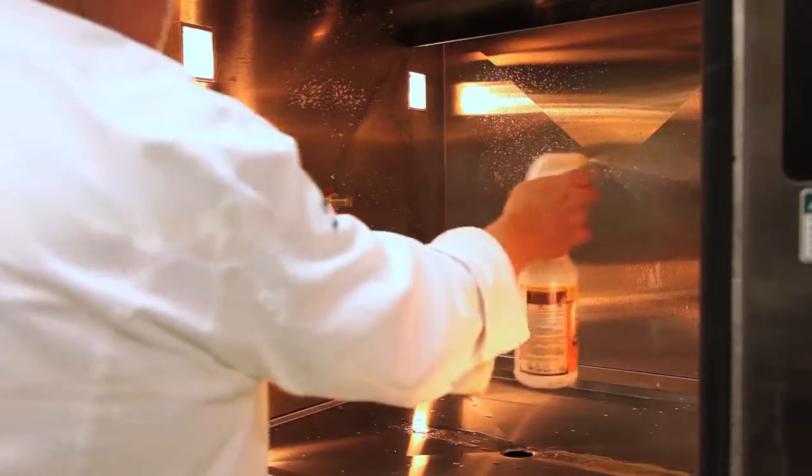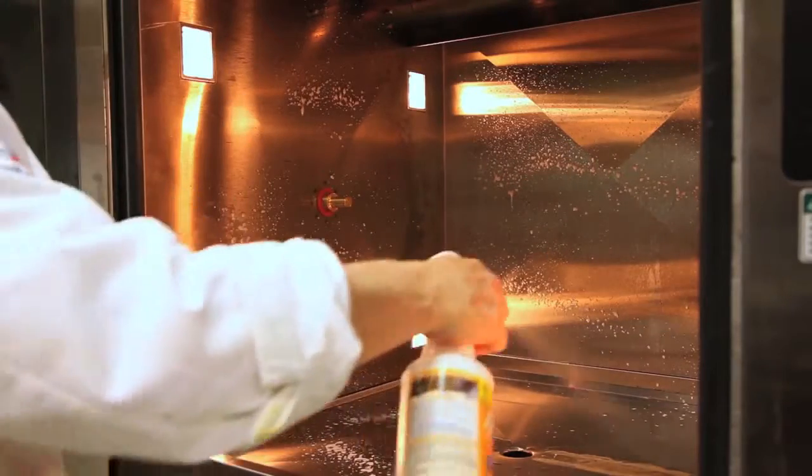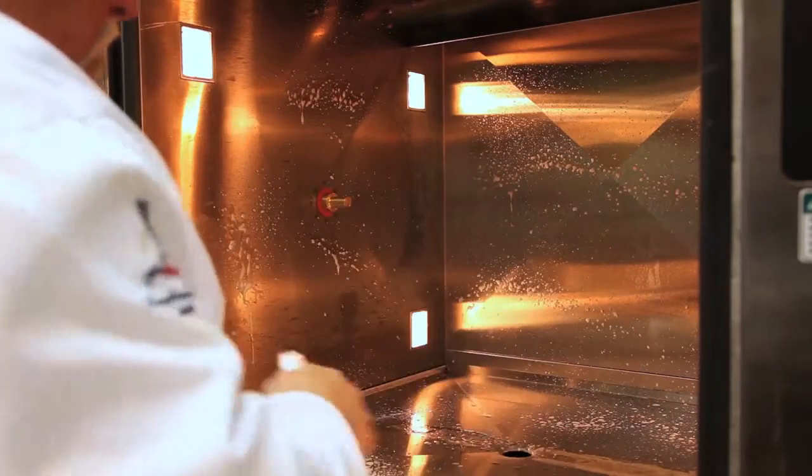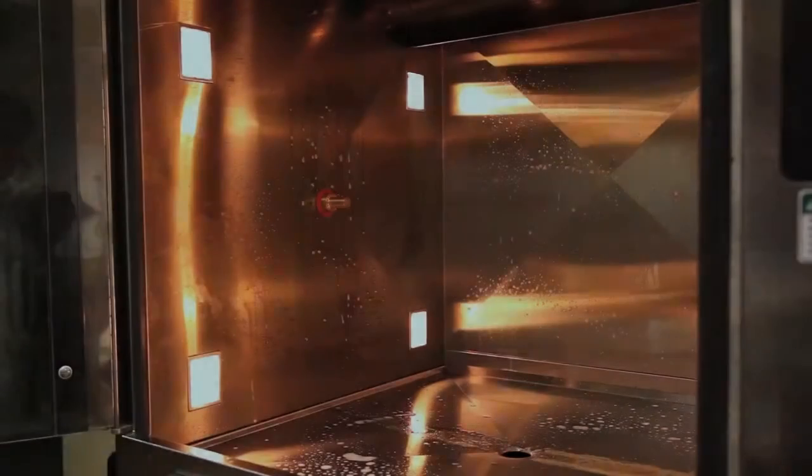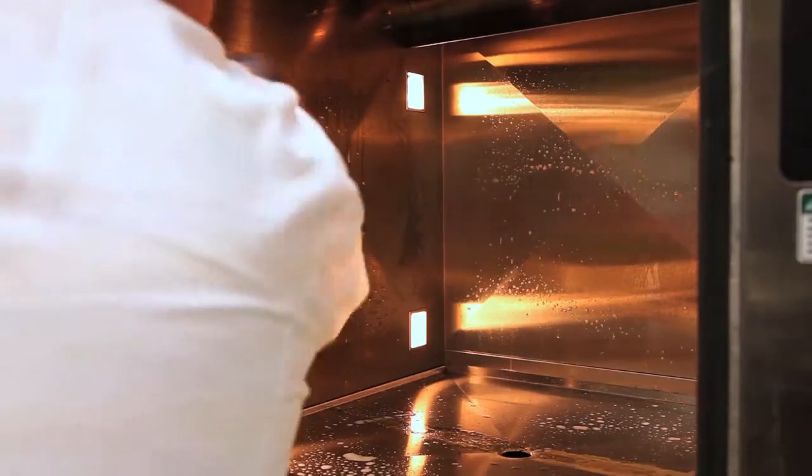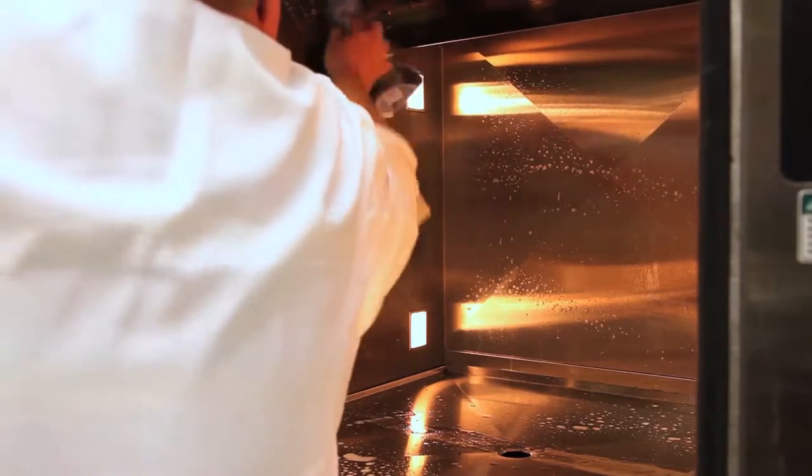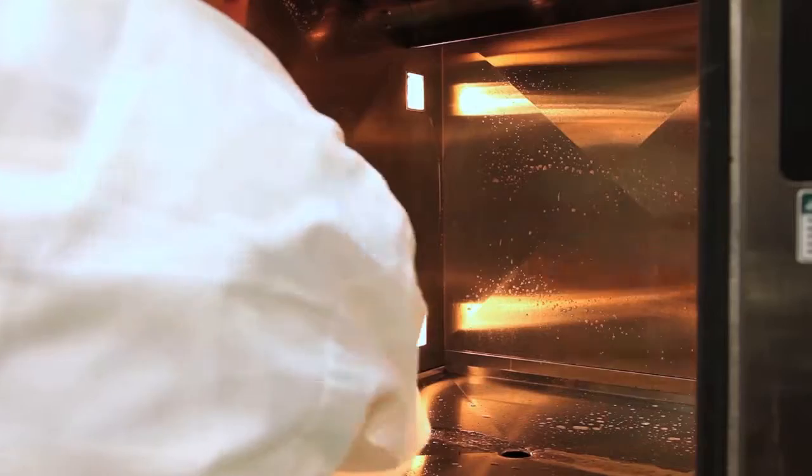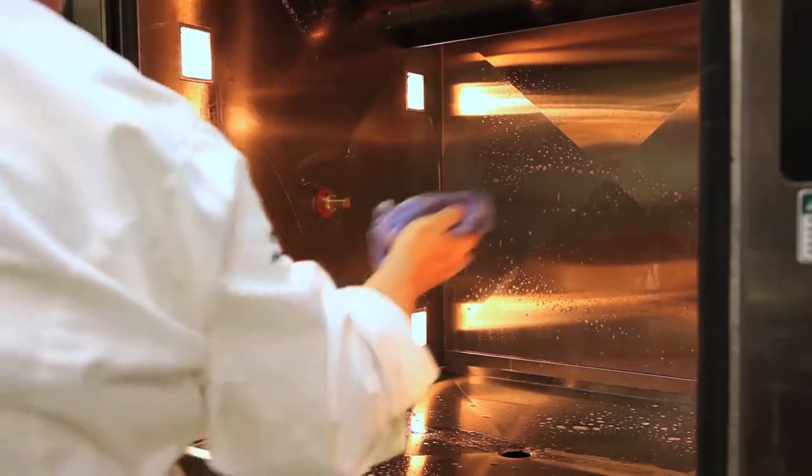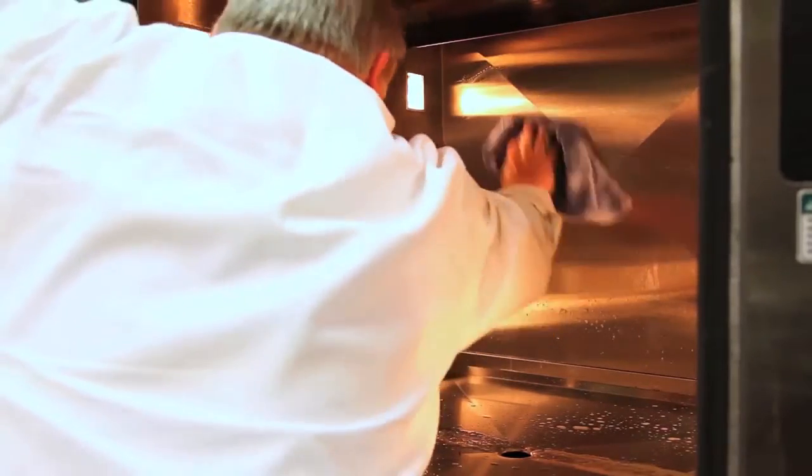Now spraying a grease relief chemical and allowing it to sit for five minutes is correct procedure. Then using a cloth with soap and water to clean the complete interior of the oven, paying attention to corners and the roof.